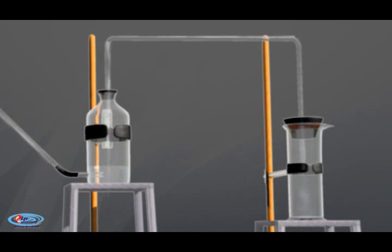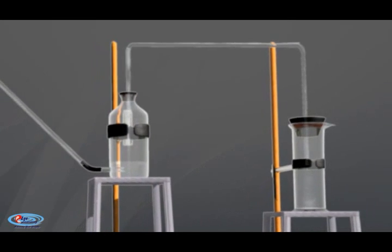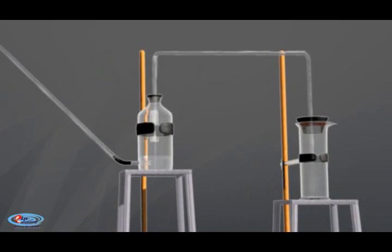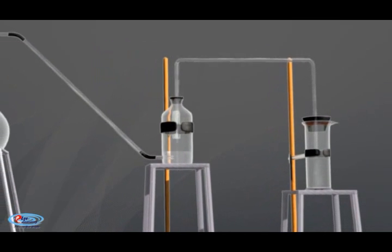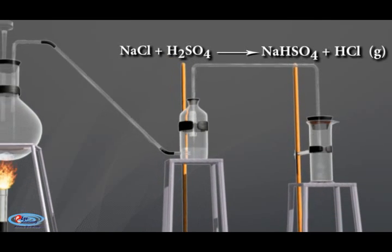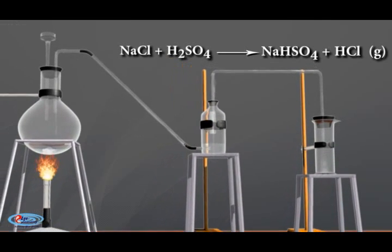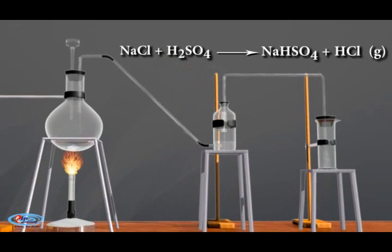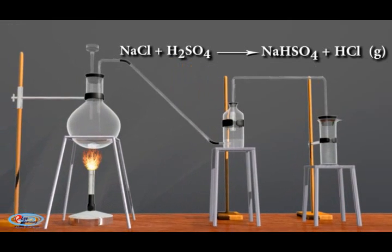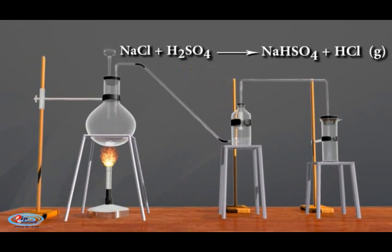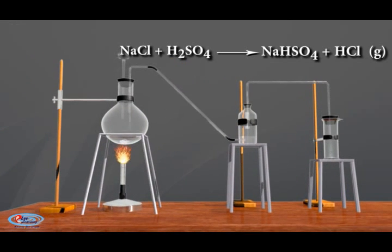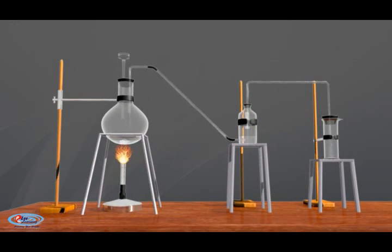The reactions that take place in the experiment: NaCl plus H2SO4 heated at 200 degrees Celsius gives NaHSO4 plus HCl gas. This reaction continues by evolution of HCl gas and can occur up to the stage of formation of sodium sulfate.